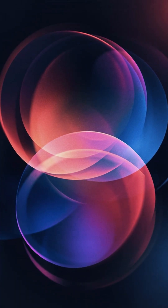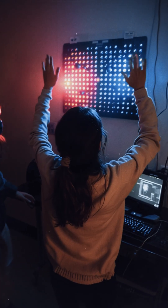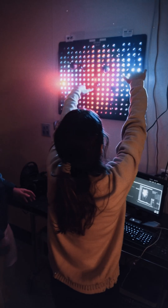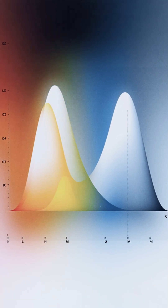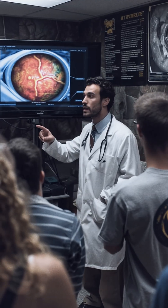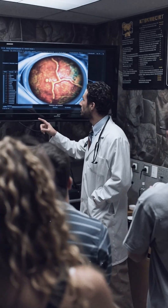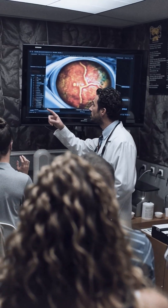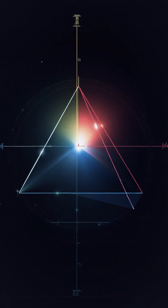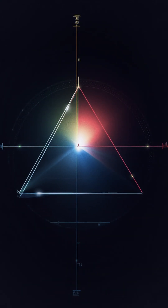Purple, by contrast, only appears when red and blue light are seen together. Human eyes use three kinds of cone cells, roughly tuned to red, green, and blue. Most colors we perceive come from different activation ratios of these three.